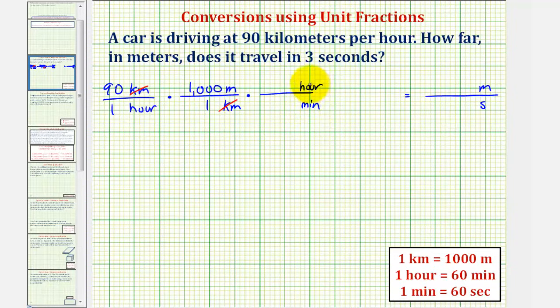And the conversion is that one hour equals 60 minutes, so we'll have one hour over 60 minutes. Notice now, the units of hours simplifies out, so now we'll have to convert minutes to seconds.